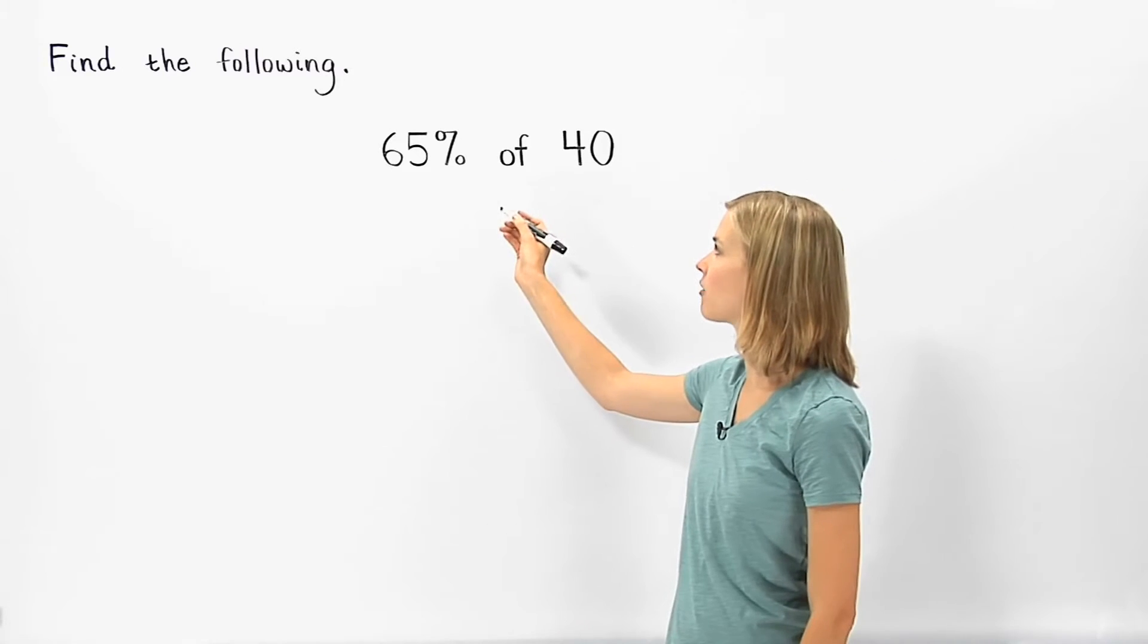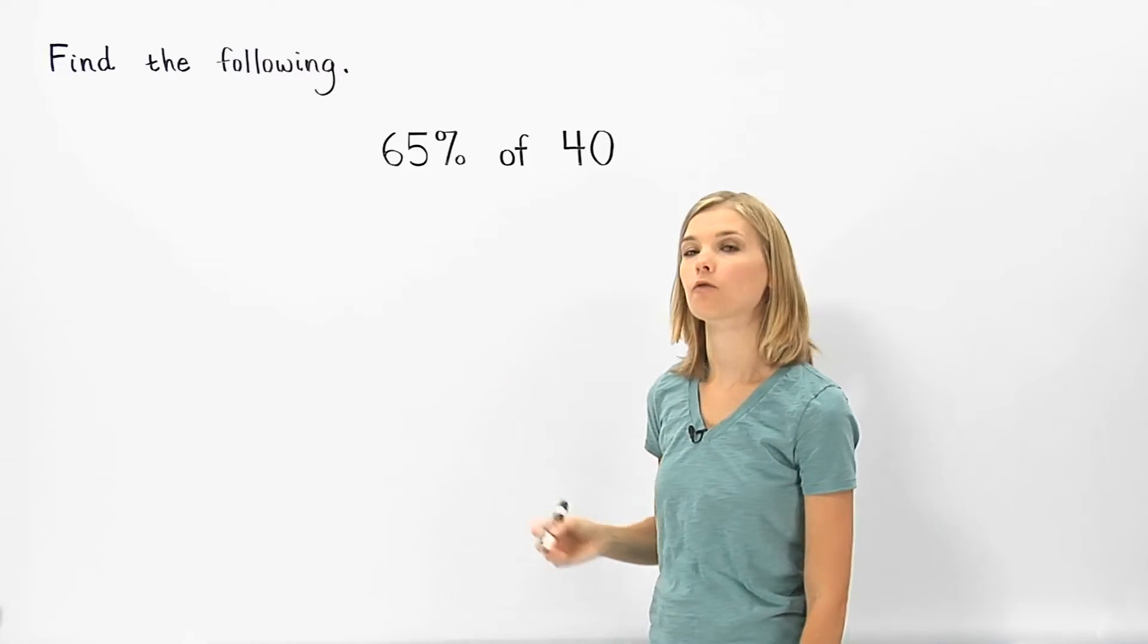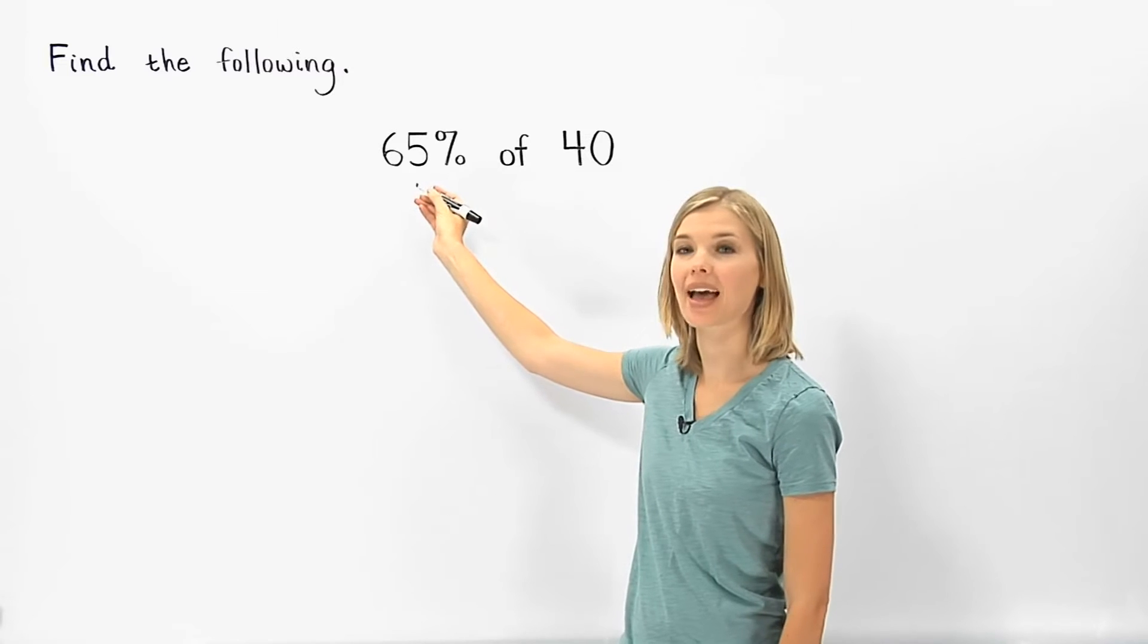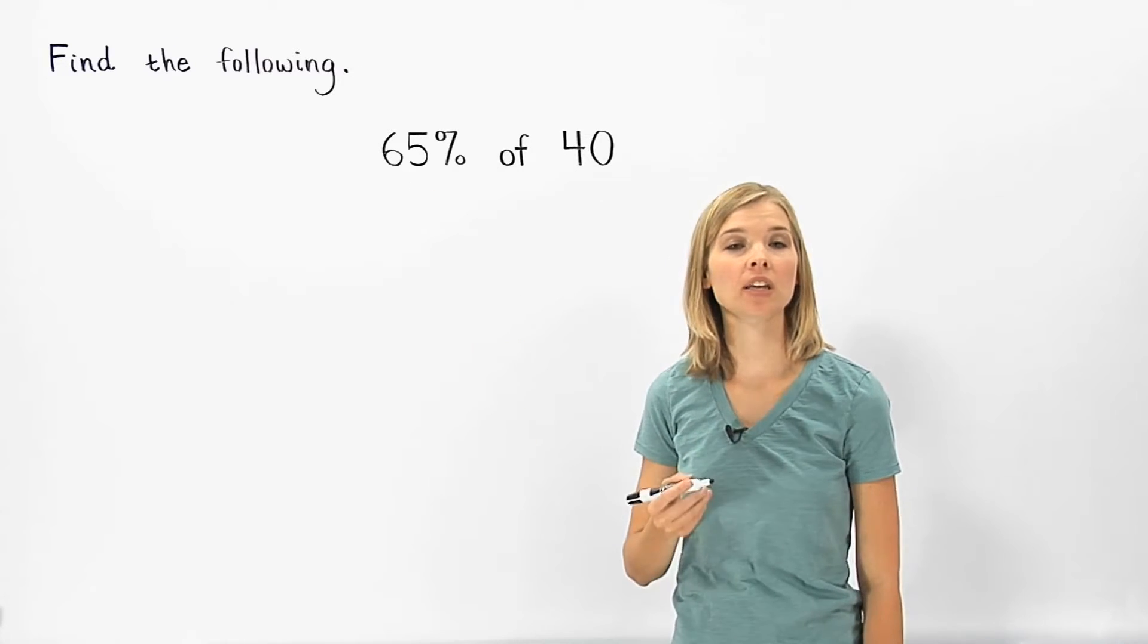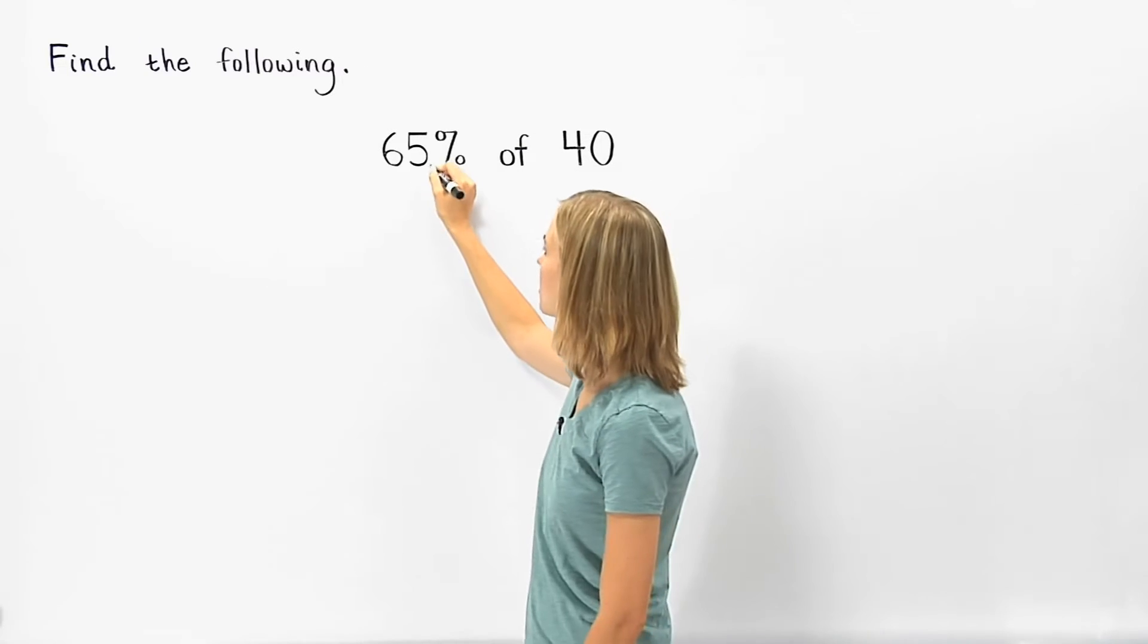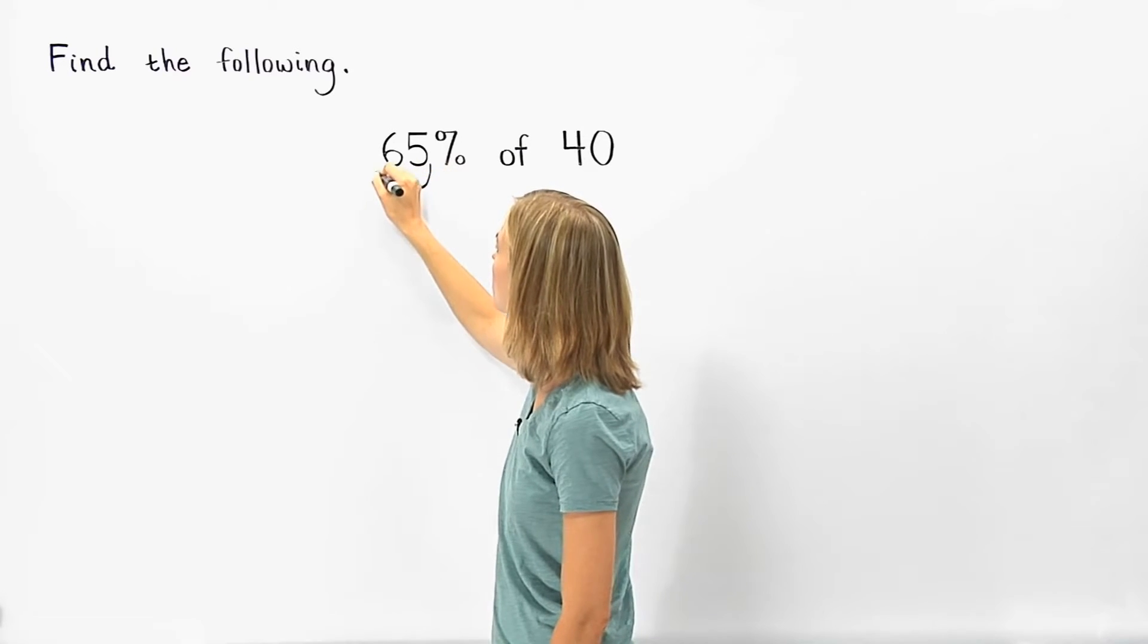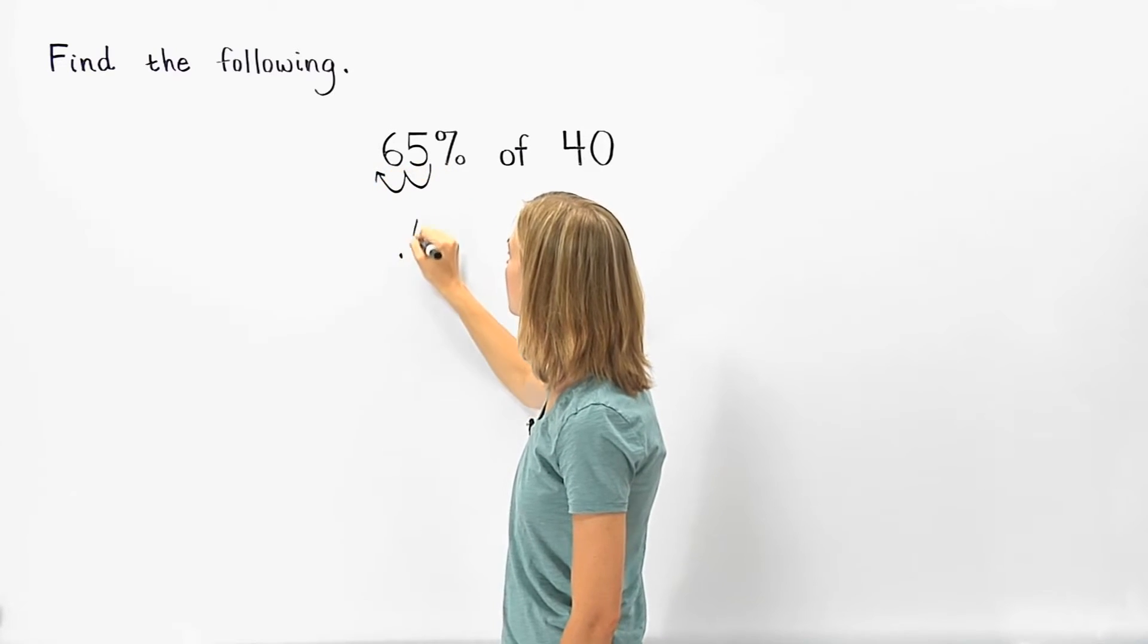To find 65% of 40, first write 65% as a decimal by moving the decimal point two places to the left, 1, 2, to get 0.65.